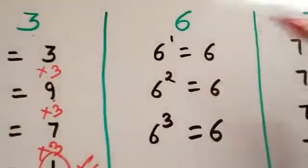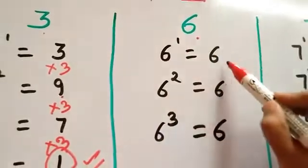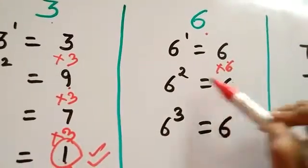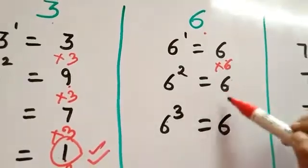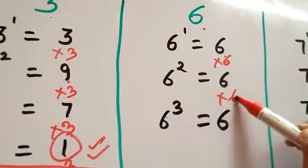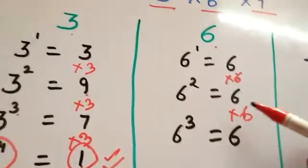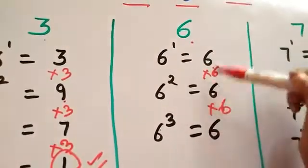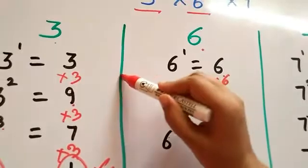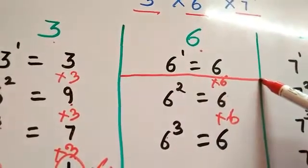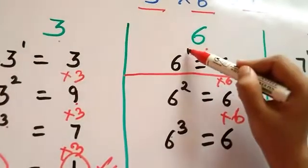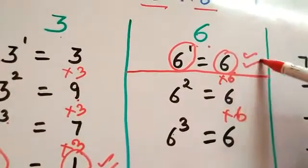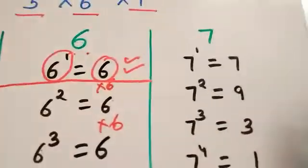Now let's check for 6. 6 raised to the power 1 is 6. 6 raised to the power 2 is 6 into 6, which is 36 — unit digit 6. 6 raised to the power 3 into 6 is again 6. So for every term you are getting 6. The cycle for 6 is 6 raised to the power 1, which is 6.